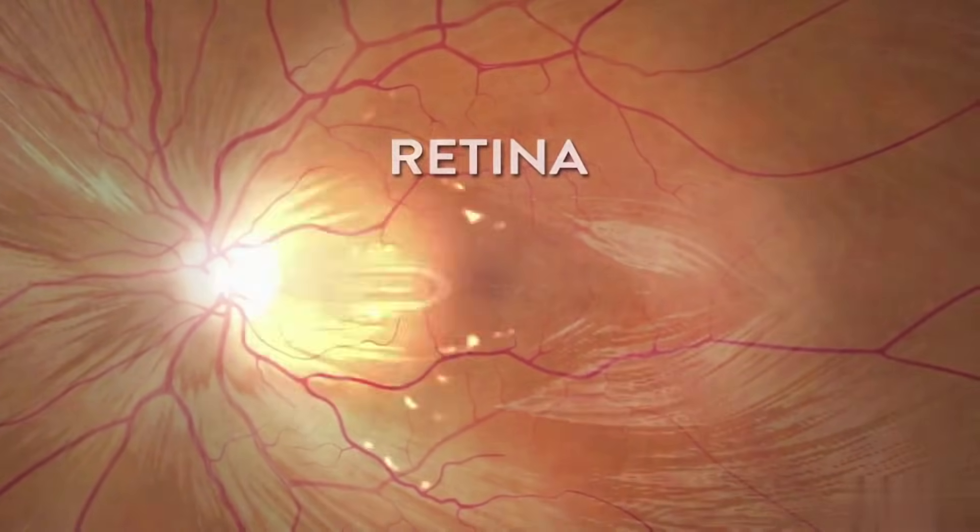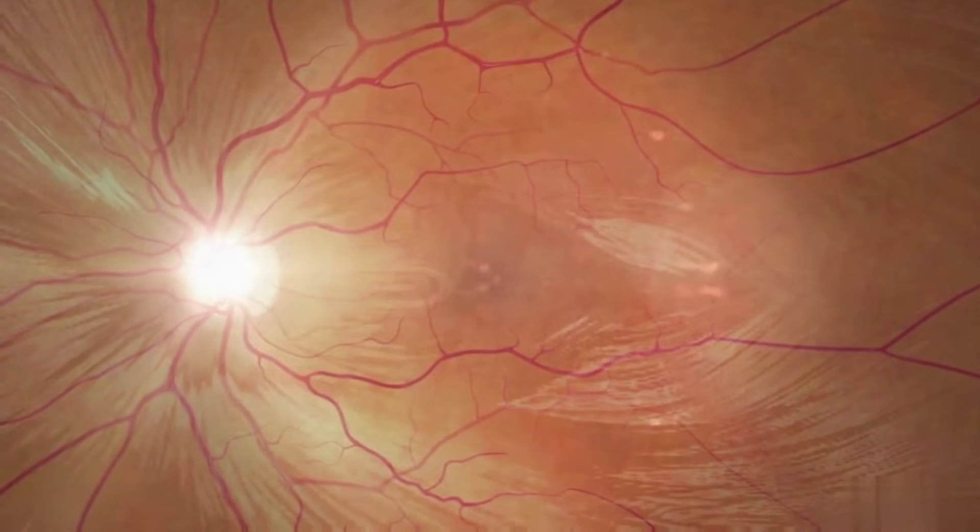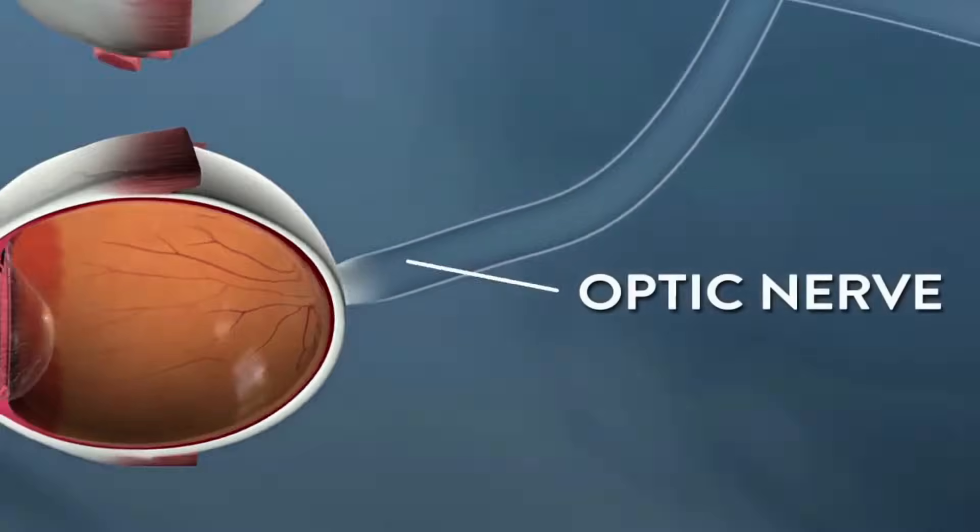The retina then converts this light energy into electrical impulses and passes it through the optic nerve, also called the second cranial nerve.